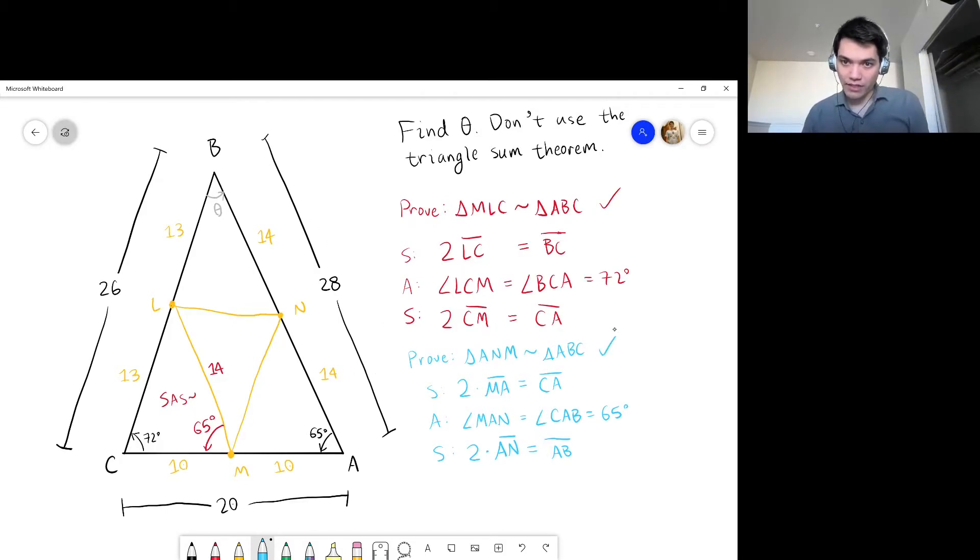We've shown that these are similar, and because the side ratio is half, this triangle is again half as large as the large triangle in terms of side lengths. That means this side over here, NM, which corresponds to the side BC, has to be half of 26, which is 13, so it has to be of length 13 units.